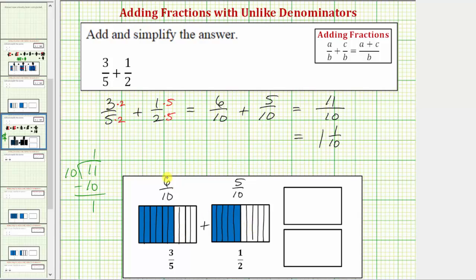And we see we have a total of six plus five, or eleven parts or pieces, where each piece equals one tenth, giving us a sum of eleven tenths.